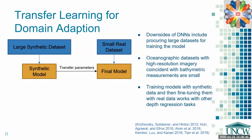However, the downsides of deep neural networks include procuring large data sets for training the model. Oceanographic data sets with high resolution imagery that is coincident with accurate bathymetric measurements is very small, with the Duck, North Carolina data set being unique both in its measurement frequency and accuracy. However, it's been shown that training models with synthetic data sets and then fine tuning them with smaller subsets of real data has worked with other depth regression tasks, and we hope to replicate that approach here.